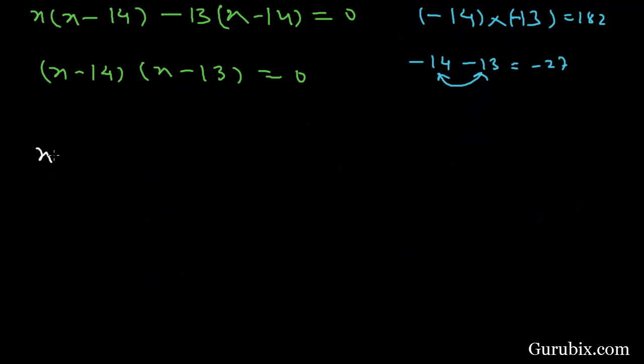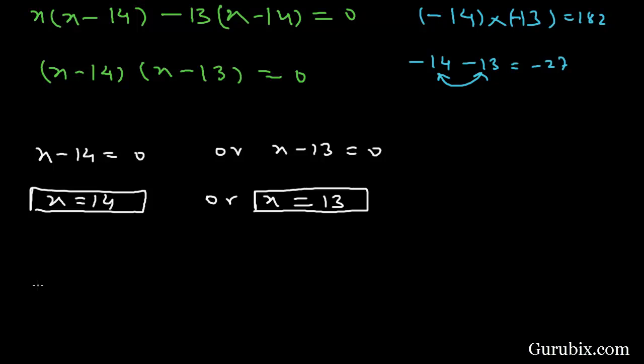Now we shall put x minus 14 equals to 0 or x minus 13 equals to 0. This means x equals 14 or x equals 13. Therefore, the numbers are 13 and 14. So this is the solution of the question.